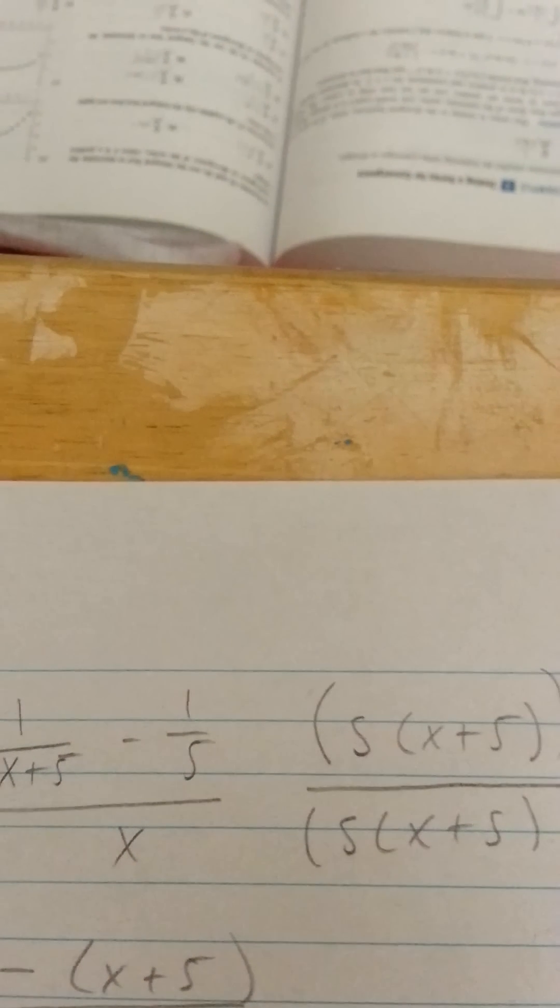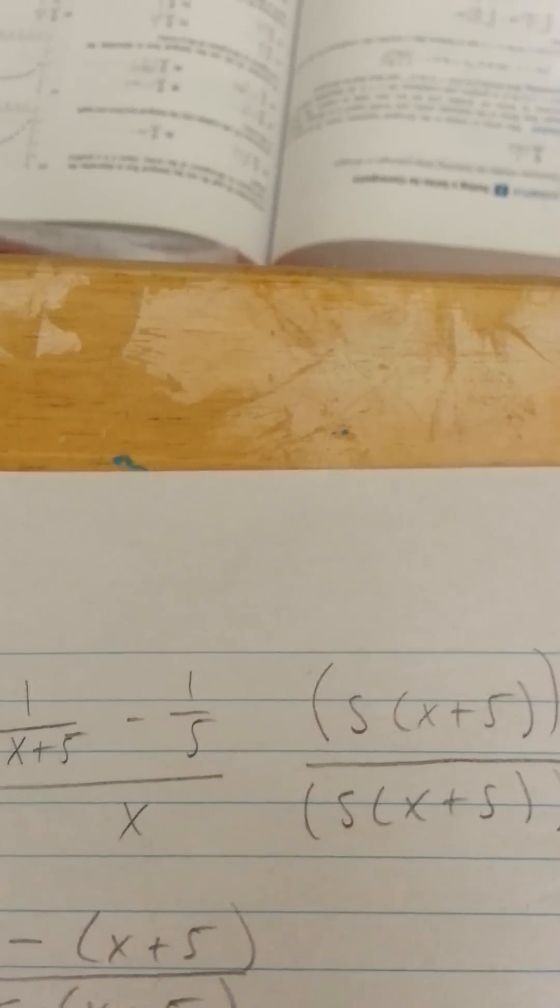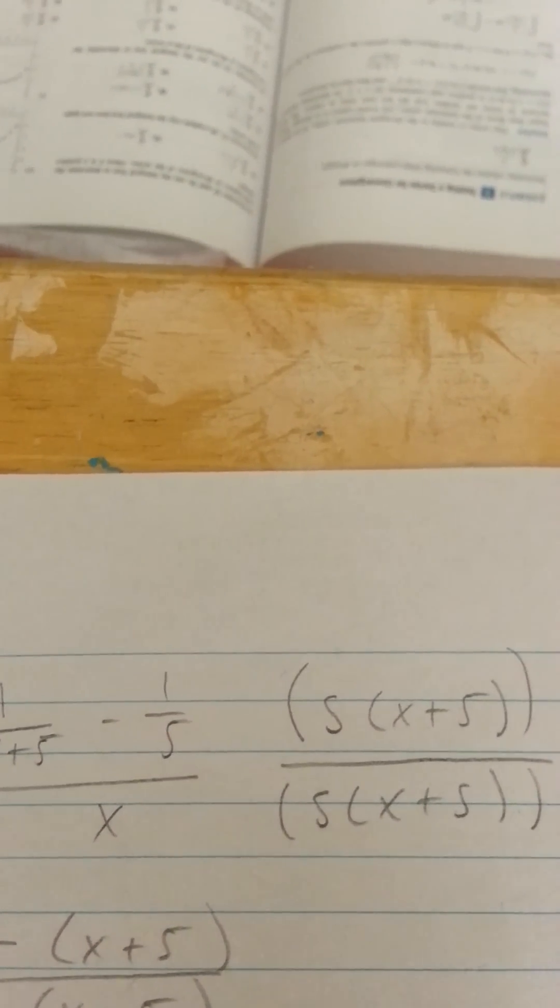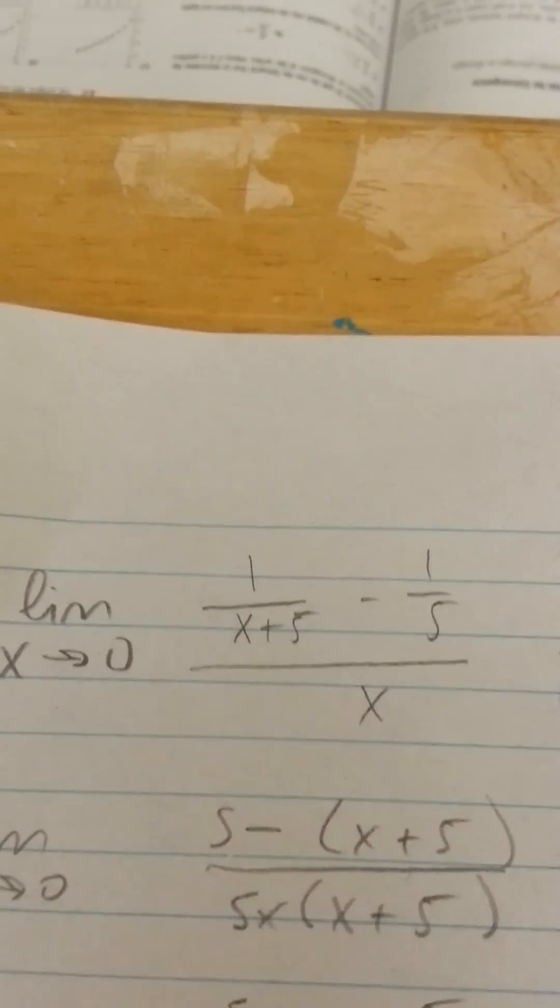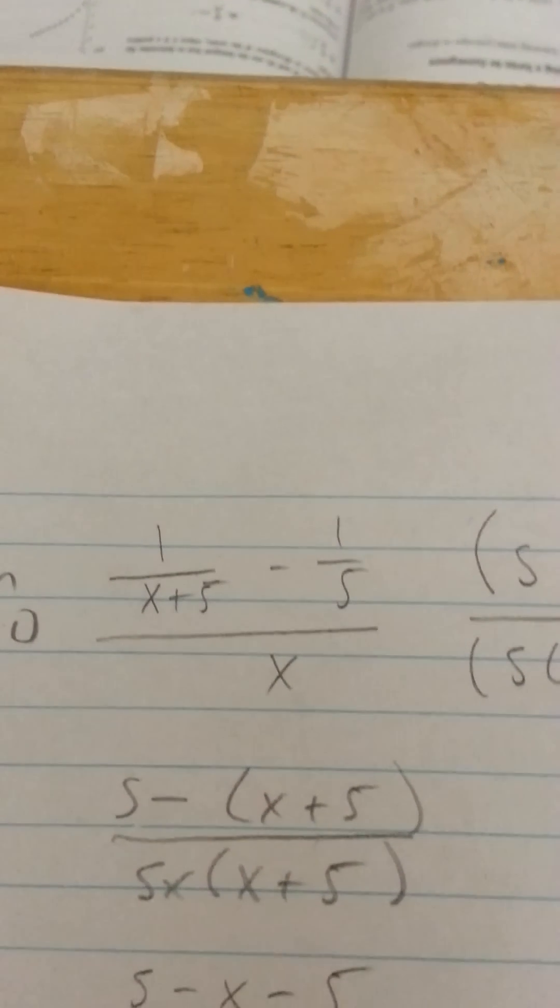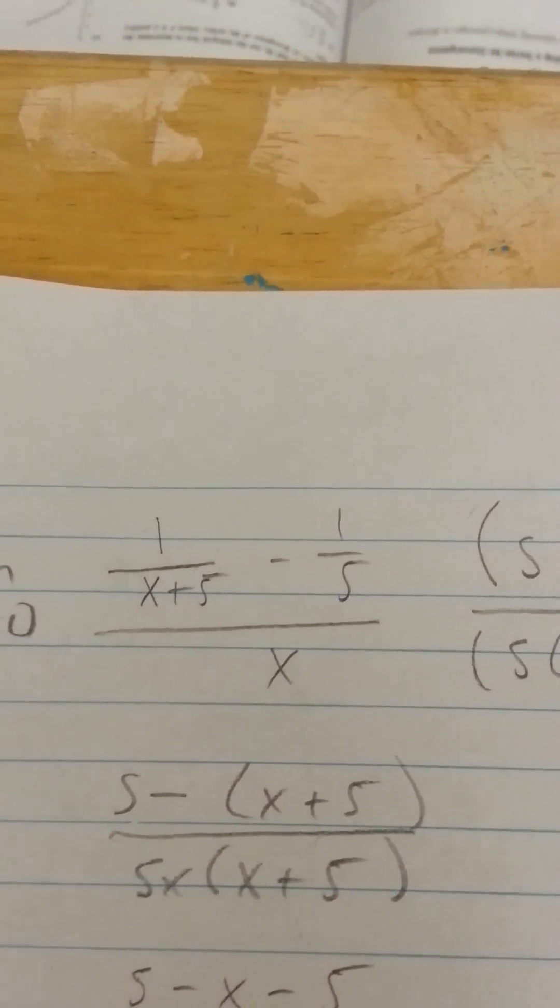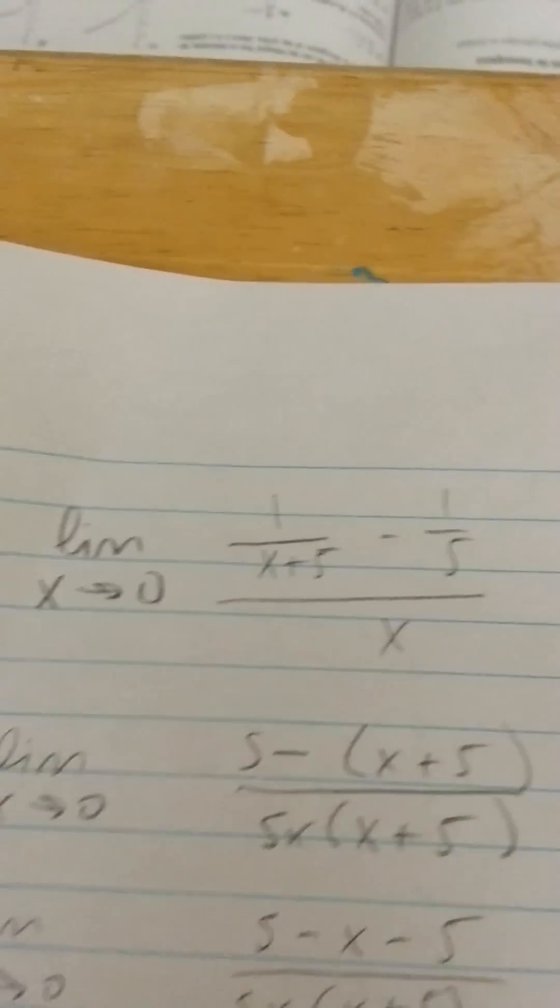So what we're going to do first to get rid of those fractions within a fraction is multiply both the top and the bottom by the least common denominator. When we do that we're able to cancel out and then we get 5 minus x plus 5 all over 5x times x plus 5.